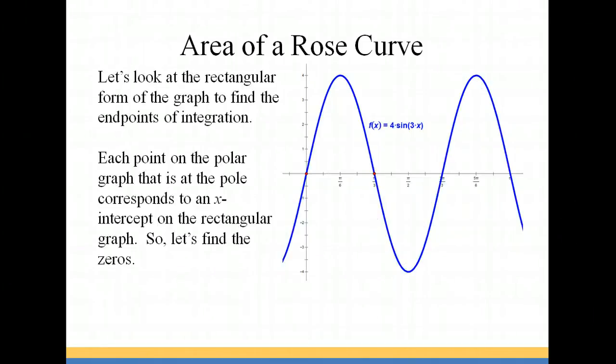To find the endpoints of integration, we can compare our graph to that of the rectangular form of the graph. So we have f of x equals 4 sine 3x. Where this rectangular graph has x-intercepts or zeros, the polar graph is going to have points at the pole. So we need to find the zeros of this graph.